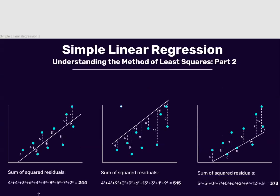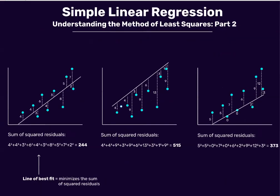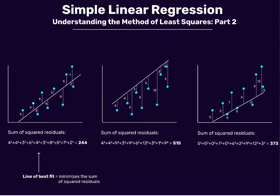To understand this idea, let's look at an example. Suppose we have a scatter plot of 10 points. For each point we can calculate the residual. Let's say we put a line here to capture the trend going on in our scatter plot. We then calculate the residual of each observation — the distance from each observation to the line. For this first one, let's say the residual is four.